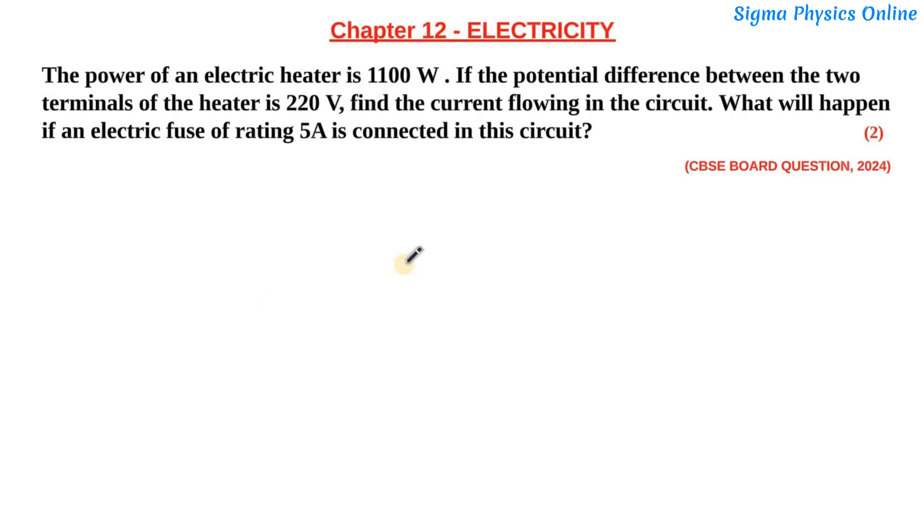Hello students, welcome back. Let's take up another question. This question carries two marks. The power of an electric heater is 1100 watt. If the potential difference between the two terminals of the heater is 220 volt, find the current flowing in the circuit. What will happen if an electric fuse of rating 5 ampere is connected in this circuit?